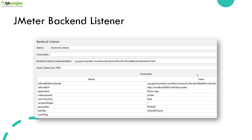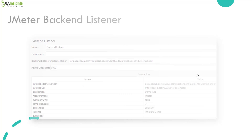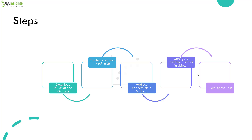We are going to leverage InfluxDB 2.0, and you cannot run 2.0 natively on Windows OS, so we are going to use Docker. First, we will download the InfluxDB and Grafana images, then create a bucket in InfluxDB, add the connection in Grafana, and configure the backend listener in JMeter before executing the test. Grafana is totally optional because InfluxDB comes with powerful visualization, but I will show how to connect your bucket with Grafana.